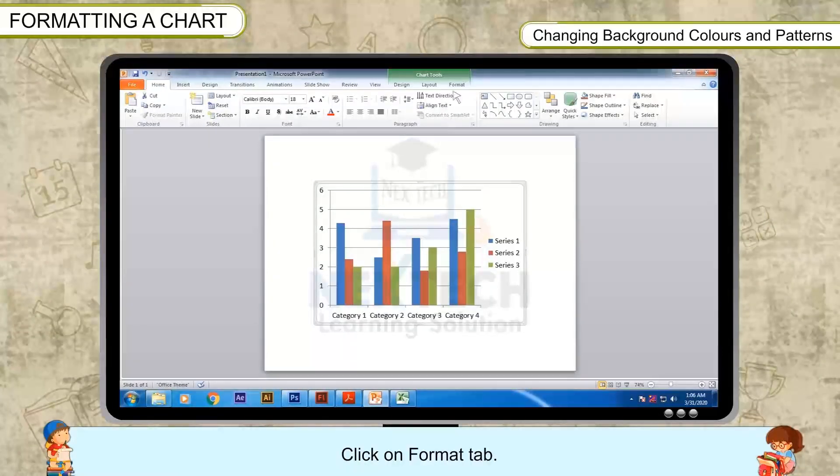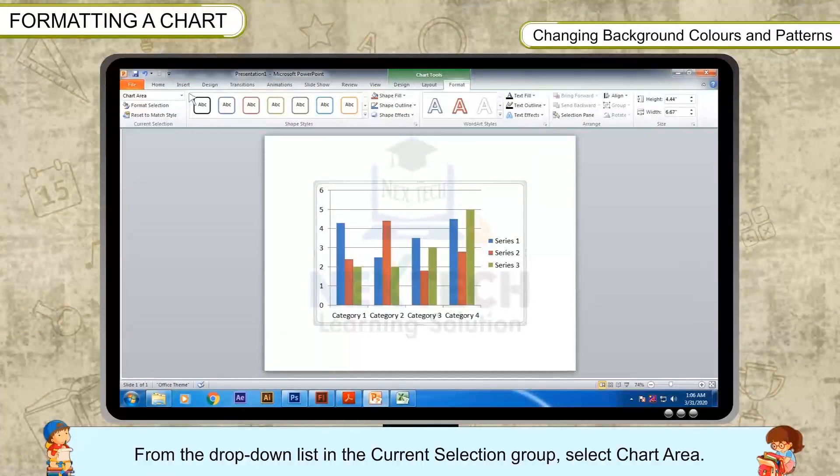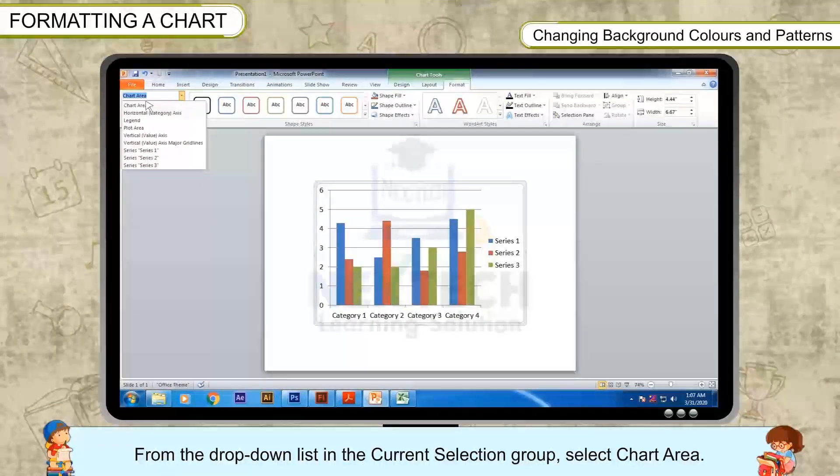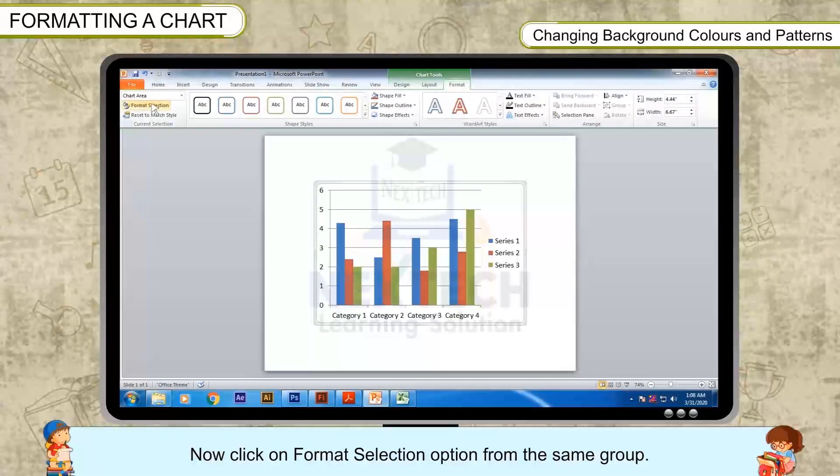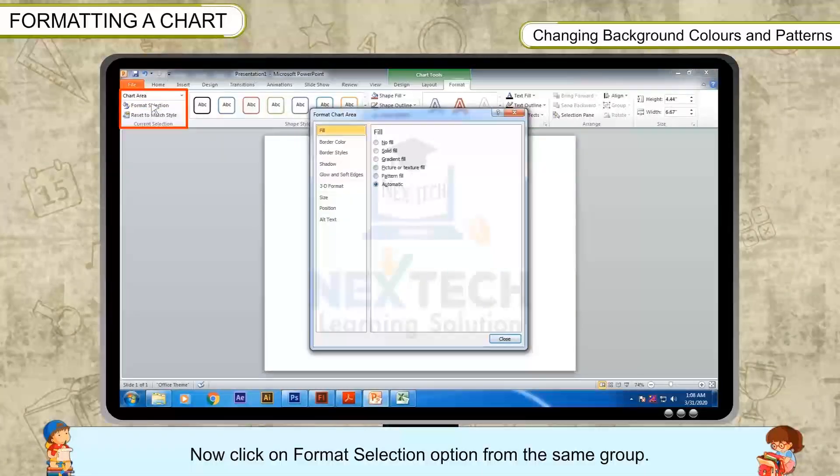Click on Format tab. From the drop-down list in the Current Selection group, select Chart Area. Now click on Format Selection option from the same group.